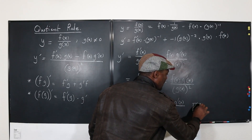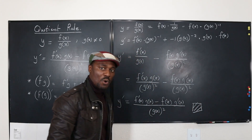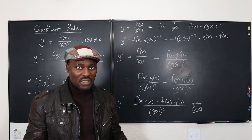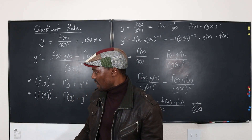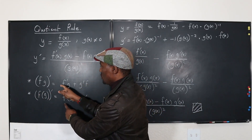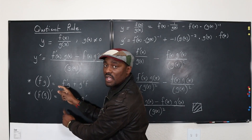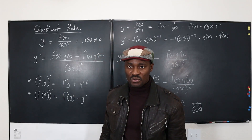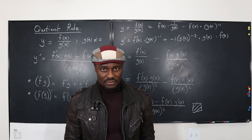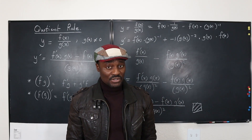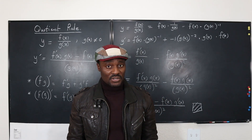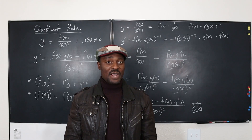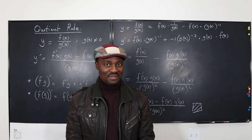And that is the quotient rule. Not complicated as long as you use your product rule and the chain rule. Never stop learning, because those who stop learning have stopped living. Bye bye.